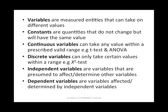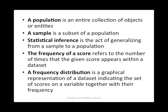Independent variables influence dependent variables. A population is an entire collection of objects or entities. A sample is a subset of a population — for example, the population of South Africa, and Gauteng is a subset of that population, which means it's a sample of South Africa. Statistical inference is the act of generalizing from a sample to a population. Let's say we want to study how many people are affected by flu during the cold winter season, but we cannot do it at a national level. So we do a study in Gauteng, and the results we get we can generalize to the whole of South Africa. But there are rules that go with statistical inferences.